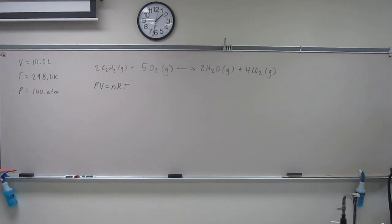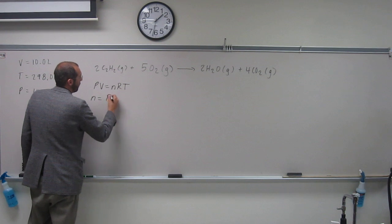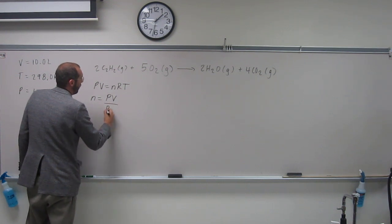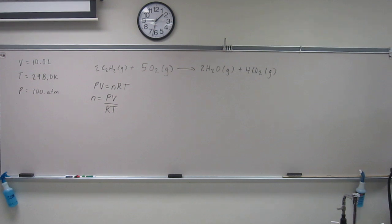What are we solving for? N, number of moles, right? So solve for N, that's going to be PV over RT. Everybody okay with that?